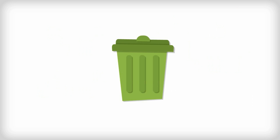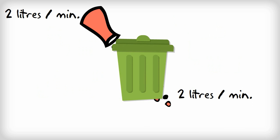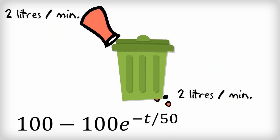Take a 100-litre bin filled with water. You pour in oil at 2 litres per minute. The bin has a leak and the oil-and-water mixture flows out at the same 2 litres per minute. The amount of oil in the bin after 2 minutes is given by an expression involving E.